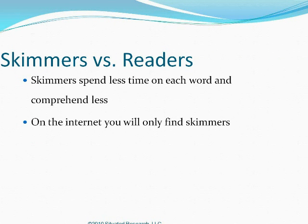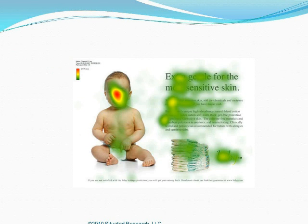Skimmers versus readers: skimmers spend less time on each word and comprehend less. On the internet, you will only find skimmers — usability research and testing found that 100% of people evaluated are skimmers. They're not going to read everything on your website, so make sure what you put there is relevant and not overwhelming. This eye tracking of a web page shows how a person without a specific task just skimmed around, looking at a baby's face, the diaper, and back — consistent with internet browsing behavior.